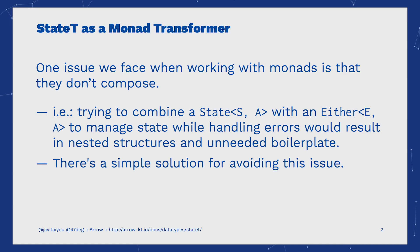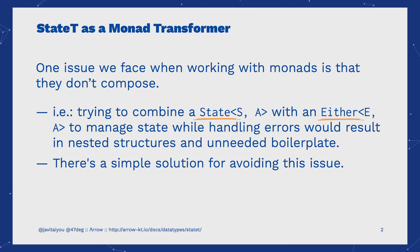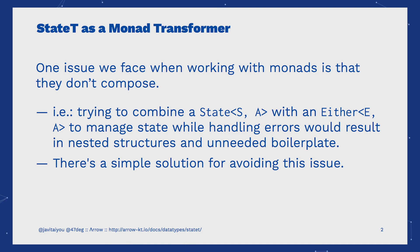One issue we face working with monads is that they don't compose. For instance, imagine we want to handle a mutable state with the state monad, but operations on our state can also fail, so we may also need to handle errors with the Either monad, that provides a branching structure allowing us to differentiate errors on the left side and correct results on the right side. Combining these two structures will result in nested structures, and we may need to work with unneeded boilerplate in order to operate with our state. Luckily, there's a really simple solution to avoid this issue.